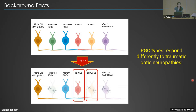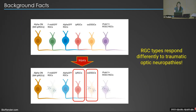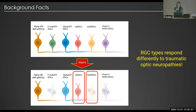This intrinsically photosensitive retinal ganglion cell is a well-known resilient type, while these on-off direction selective retinal ganglion cell types are known to be highly susceptible to injury. I'm focusing on these two RGC types because they're the focus for the background study that I will be talking about.